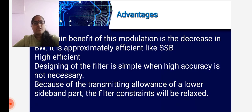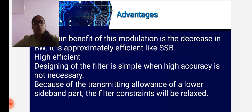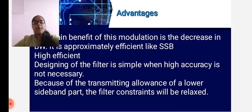Now let us learn the advantages of vestigial sideband modulation in television broadcasting. The main benefit of this modulation is a decrease in bandwidth, which is a major advantage towards television broadcasting. It is approximately as efficient as single sideband high-efficiency modulation. Designing of the filter is simple when high accuracy is not necessary. Because of the transmitting allowances of the lower sideband part, the filter constraints will be relaxed.